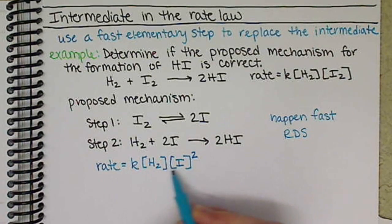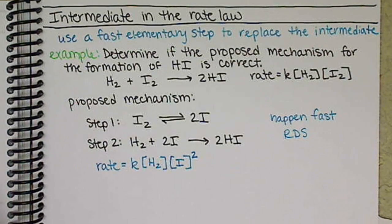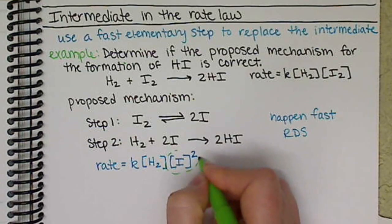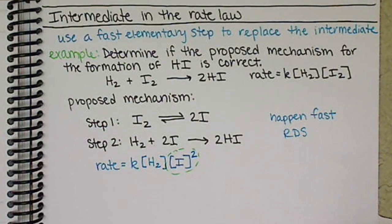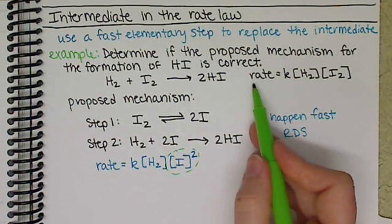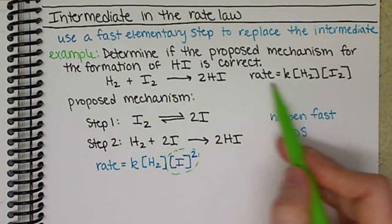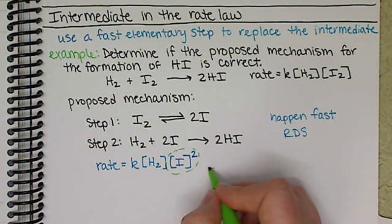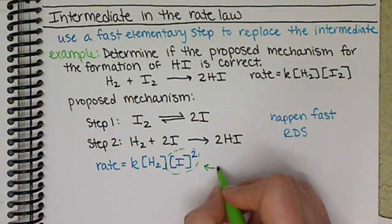The problem with this rate law is that we have an intermediate. Atomic iodine is not in our overall reaction nor in our overall rate law, so we need to get rid of this intermediate.